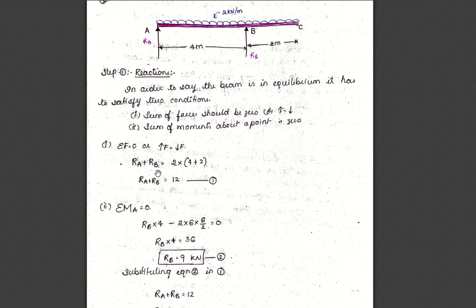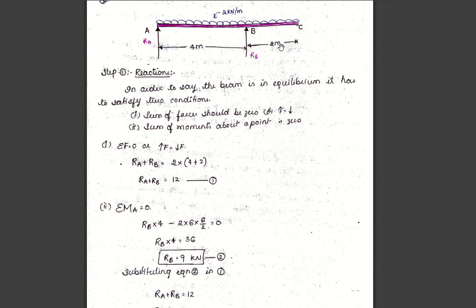Let us see the first condition: the sum of forces is equal to zero, or upward forces are equal to downward forces. The upward forces we have here are the reactions. Support A gives reaction Ra and support B gives reaction Rb. So Ra plus Rb equals the downward forces. The only downward force is the UDL over the length of 4 plus 2 = 6 meters, so 2 multiplied by 6. Ra plus Rb is equal to 12 kN.